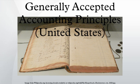Conversely, losses must be recognized when their occurrence becomes probable, whether or not it has actually occurred. This comports with the constraint of conservatism, yet brings it into conflict with the constraint of consistency, in that reflecting revenues and gains is inconsistent with the way in which losses are reflected. The Matching Principle requires that expenses be matched with revenues as long as it is reasonable to do so. Expenses are recognized not when the work is performed or a product is produced, but when the work or product actually makes its contribution to revenue. Only if no connection with revenue can be established may cost be charged as expenses to the current period. This principle allows greater evaluation of actual profitability and performance. Depreciation and cost of goods sold are good examples of the application of this principle.